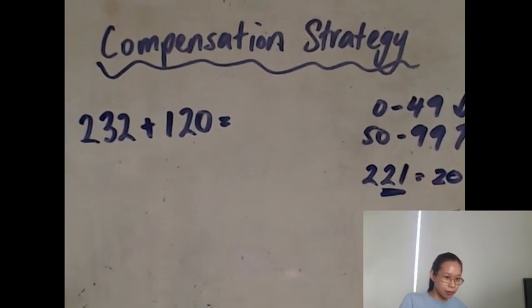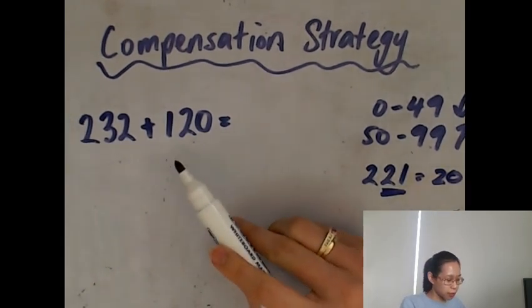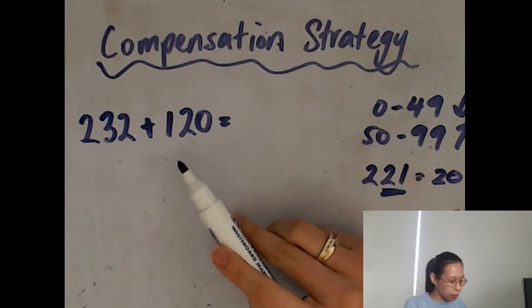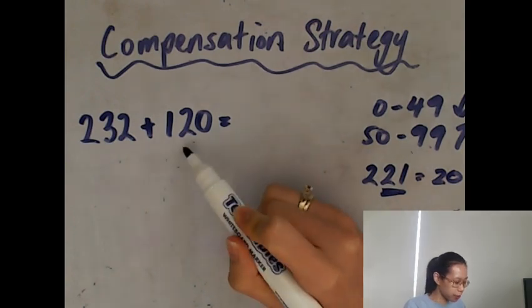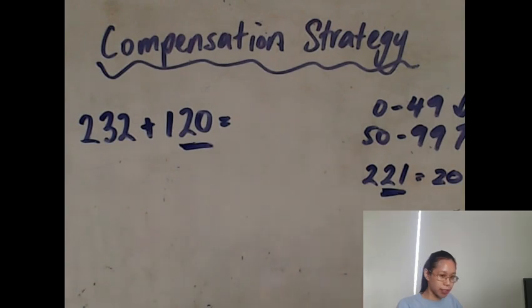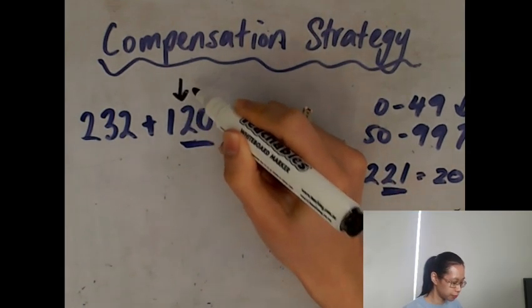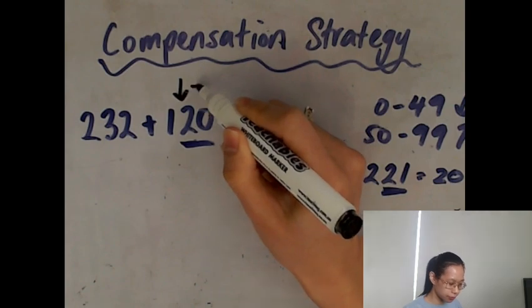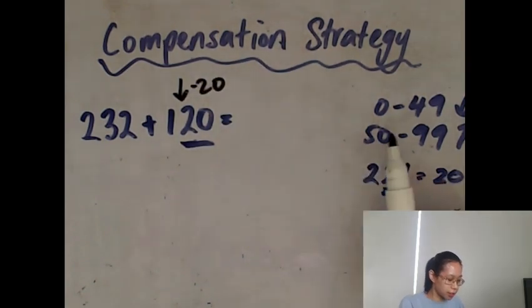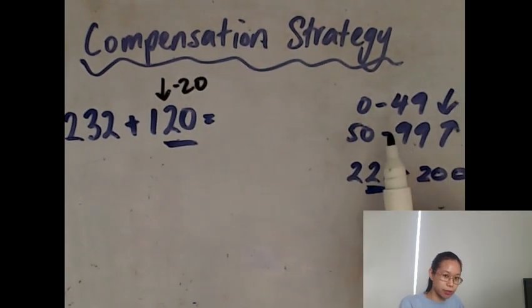Alright, so let's do it with this one. We'll have a look at this number 120. We'll have a look at the 20. Now we are going to round down because 20 is between 0 and 49.